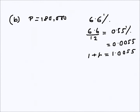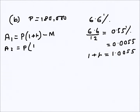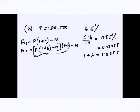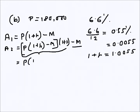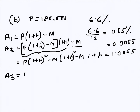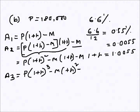After one month, starting with principal P, we have P(1 + r), and after repayment m that gives A₁. After the second month, the whole amount grows by (1 + r) and then m is subtracted. This gives A₂ = P(1 + r)² − m(1 + r) − m. We can see a pattern emerging for the amount owed after each month.